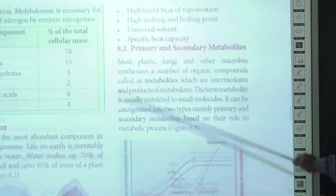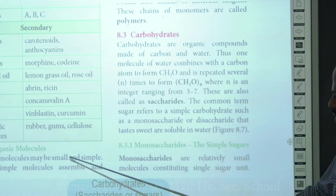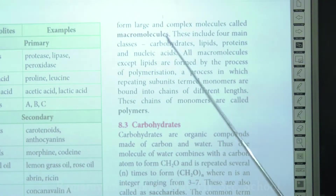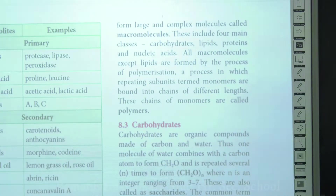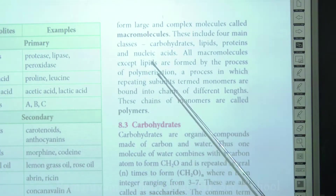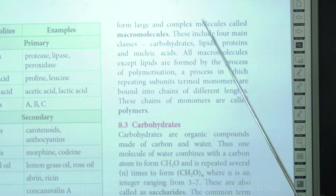Organic molecules are classified into micromolecules and macromolecules. Small, simple micromolecules assemble to form large complex macromolecules. Examples of macromolecules include carbohydrates, lipids, proteins, and nucleic acids. However, lipids are not generally included as macromolecules because they are not formed by polymerization with repeated monomeric subunits — only proteins, carbohydrates, and nucleic acids are typically called macromolecules.